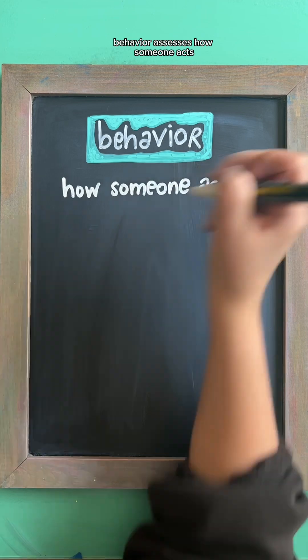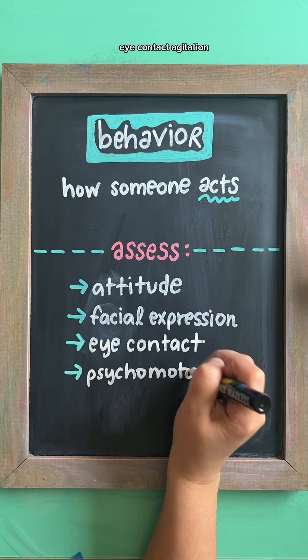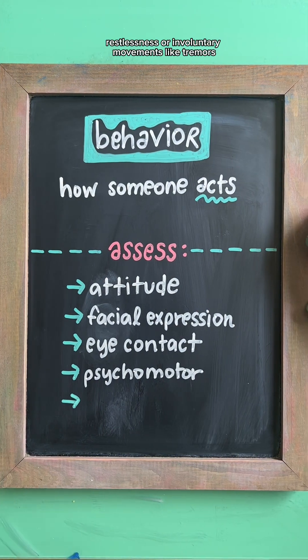Behavior assesses how someone acts. Are they cooperative, suspicious, or guarded? Observe facial expressions, eye contact, agitation, restlessness, or involuntary movements like tremors.